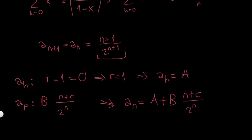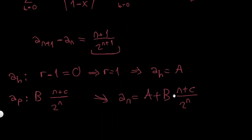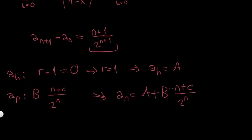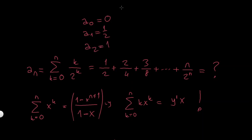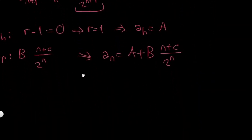Substituting, the general solution is a_n equals a plus b times (n+c) over 2 to the n. I have 3 constants — a, b, c — so I need 3 values of a_n. Putting n=0 gives a_0 = 0. Putting n=1 gives a_1 = 1/2. Putting n=2 gives 1/2 plus 2/4, so a_2 = 1.